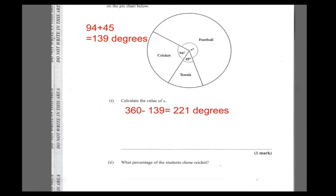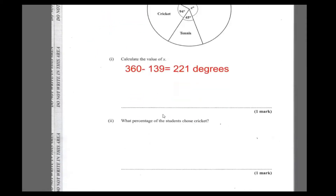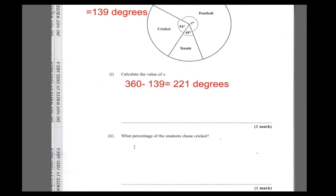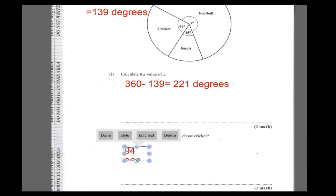Now, what percentage of students chose cricket? First and foremost, 94 degrees out of 360 chose cricket. So that is telling us 94 divided by 360, multiplied by the total amount of students, will tell us how many chose cricket.